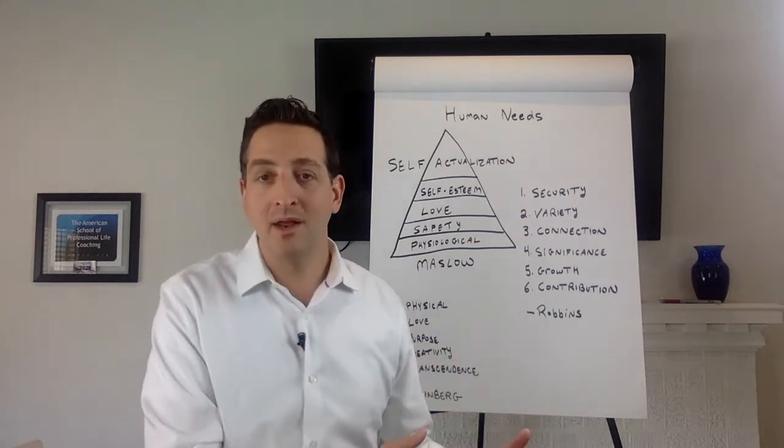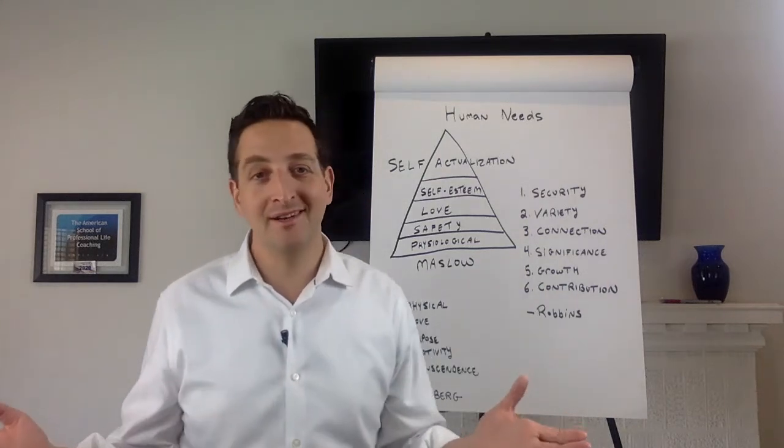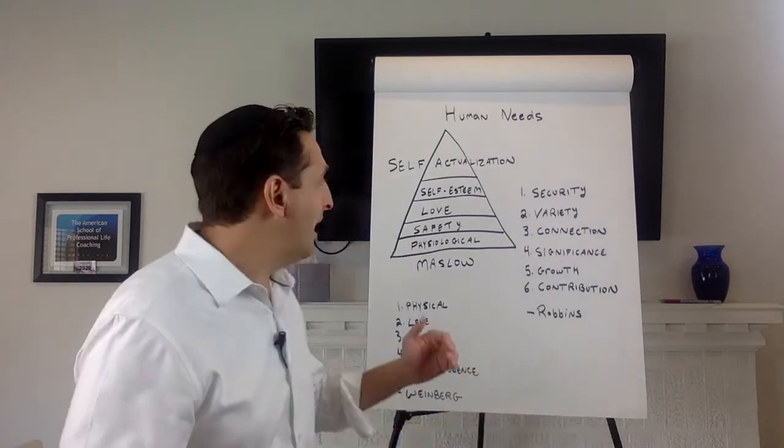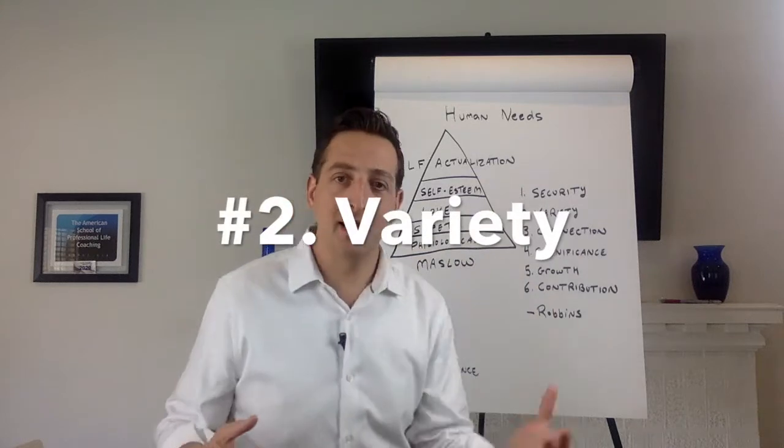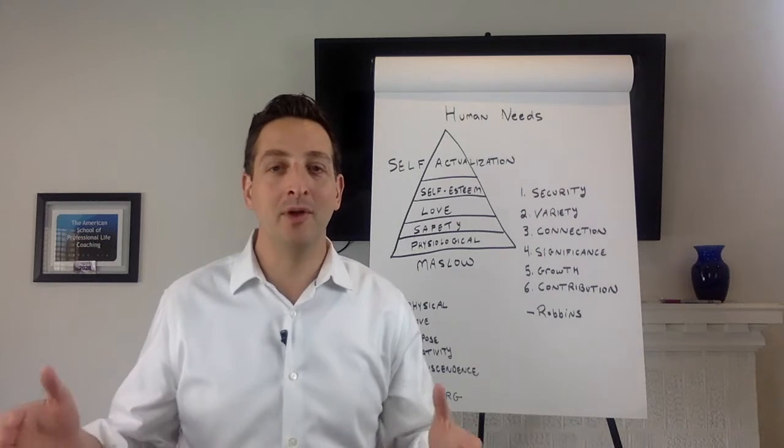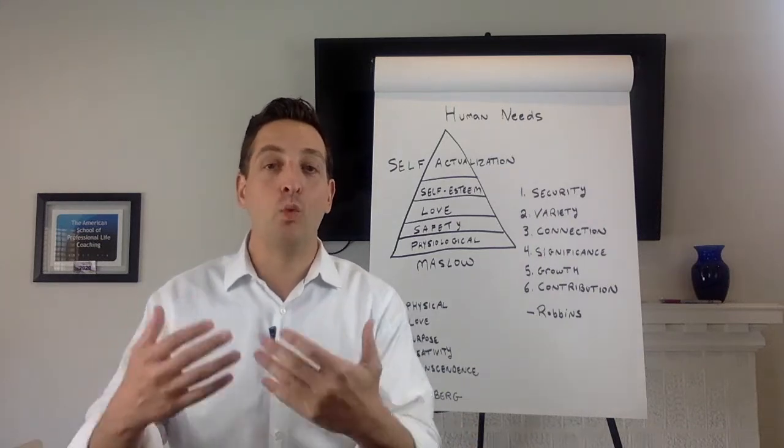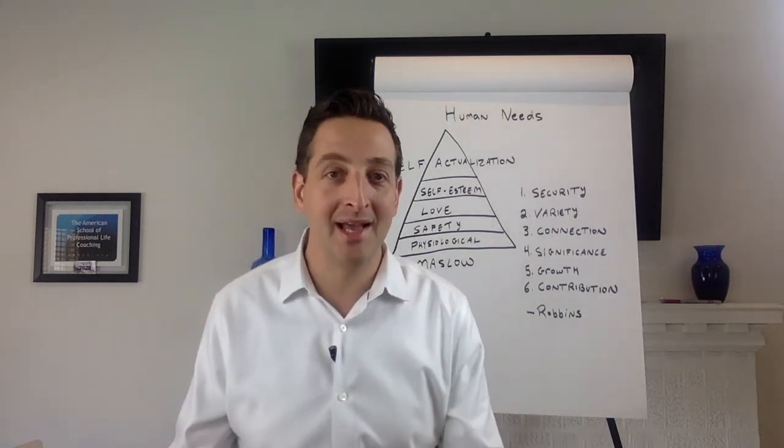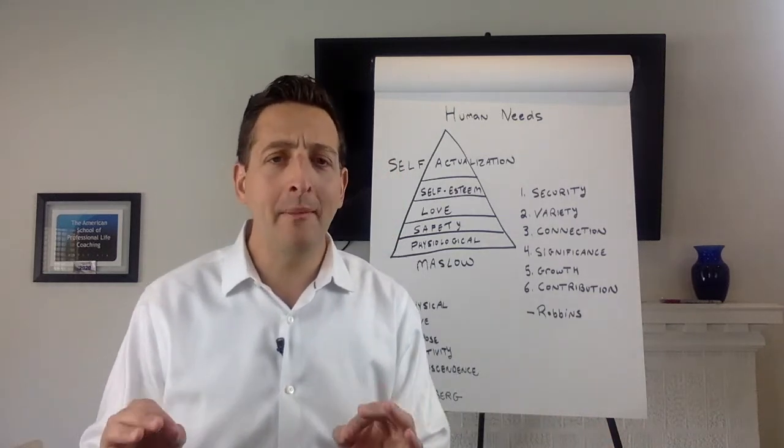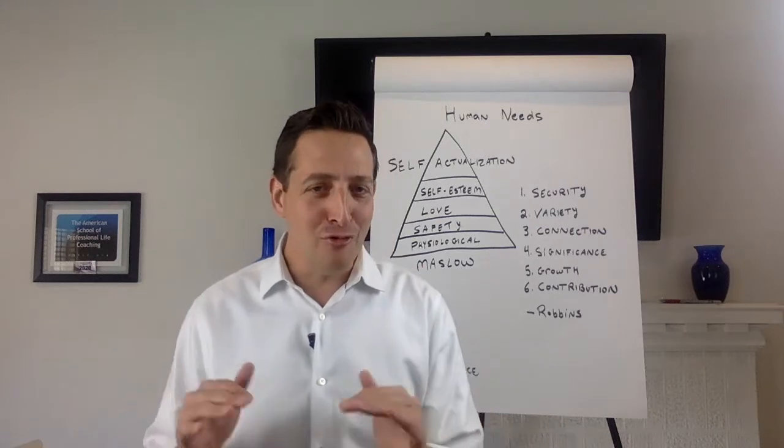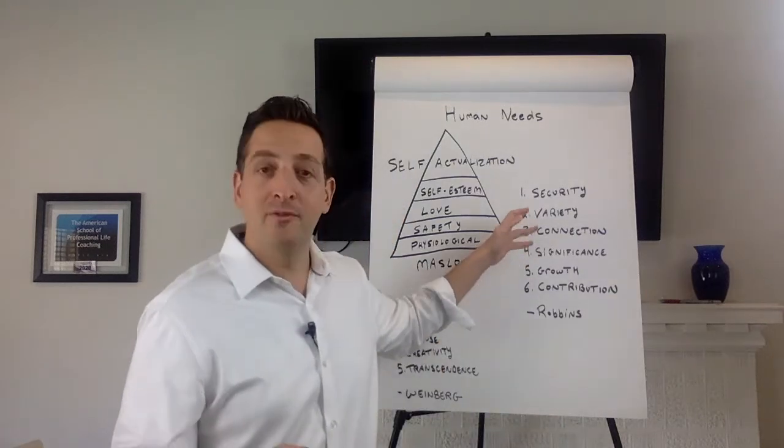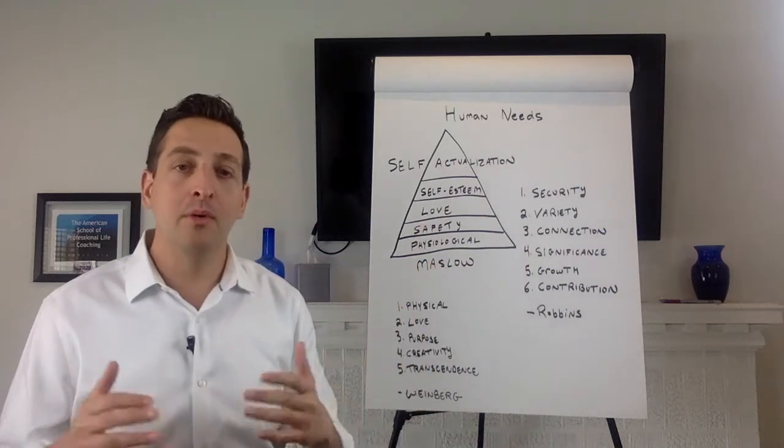The second one is variety. He felt that it's really important for people to have variety. But again, for one person they need to be jumping out of planes to get their 10 out of 10, and for other people they put a little pepper on their mashed potatoes and they're flying high. That is so exciting, a little extra pepper. So different variety for different people.